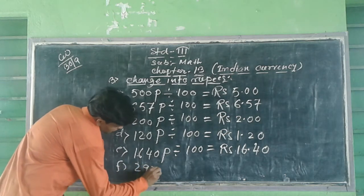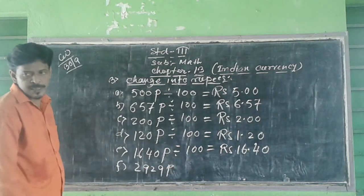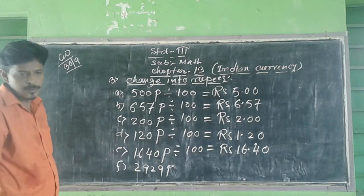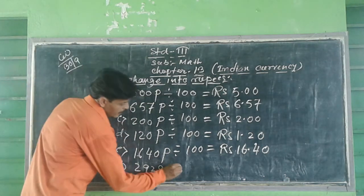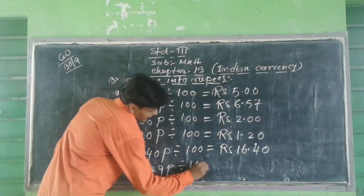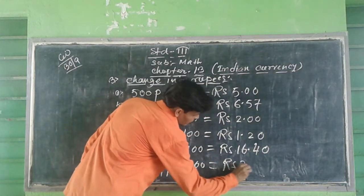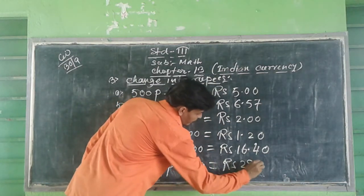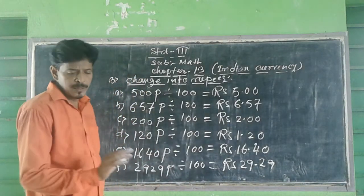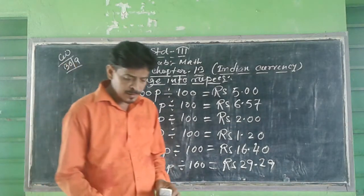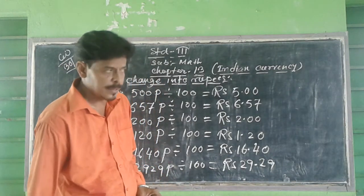Question 3f: 2929 paise divide by 100 equal to Rupees 29.29.